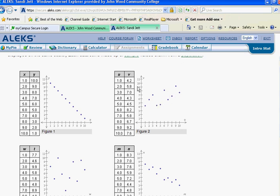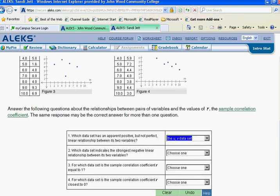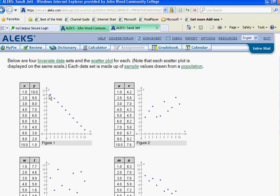It's UV. Which data set indicates the strongest negative relationship between two variables? This has a negative, a perfect negative correlation.